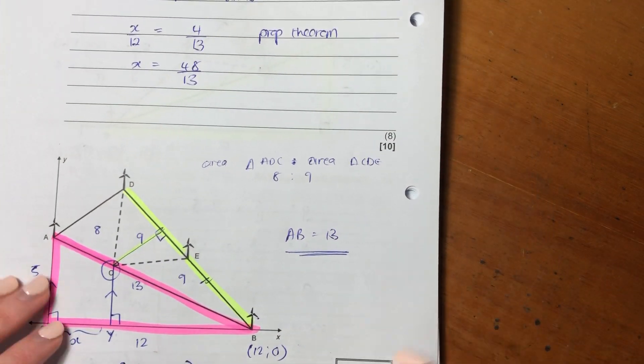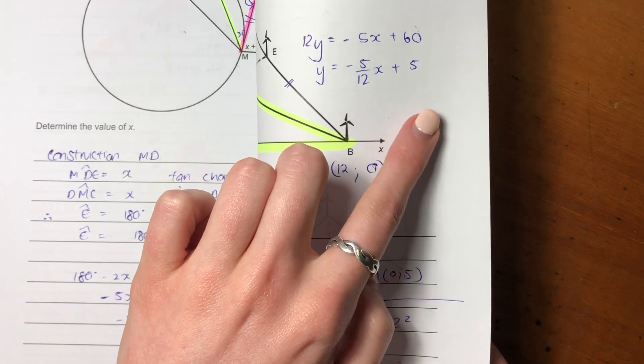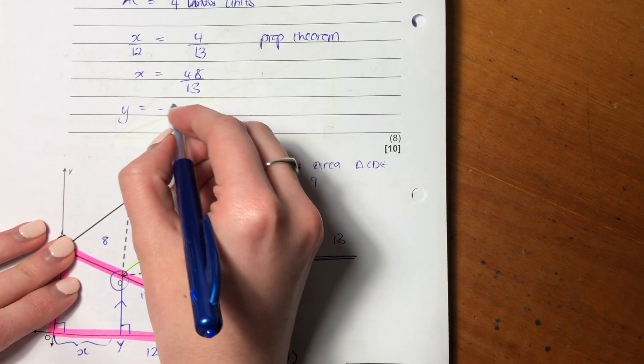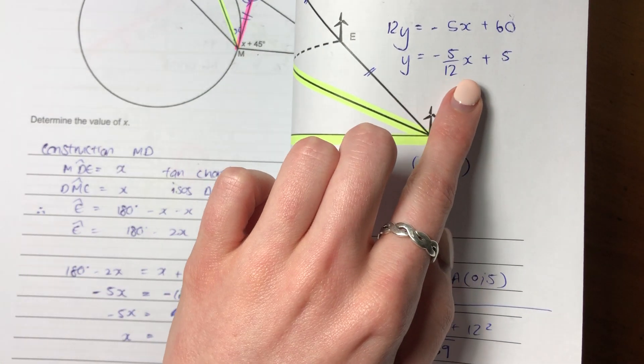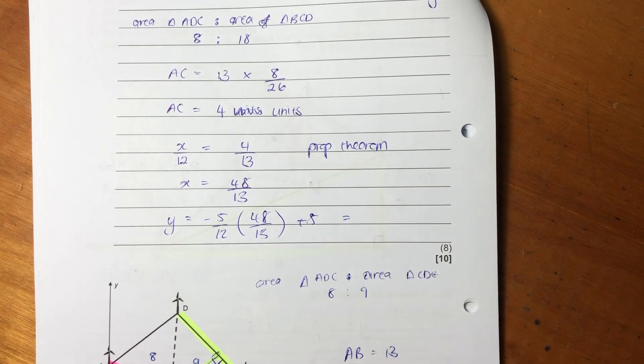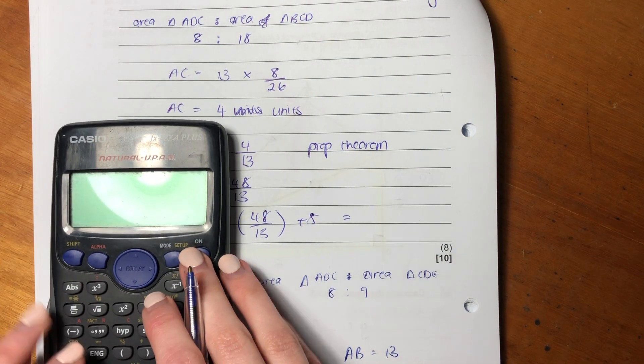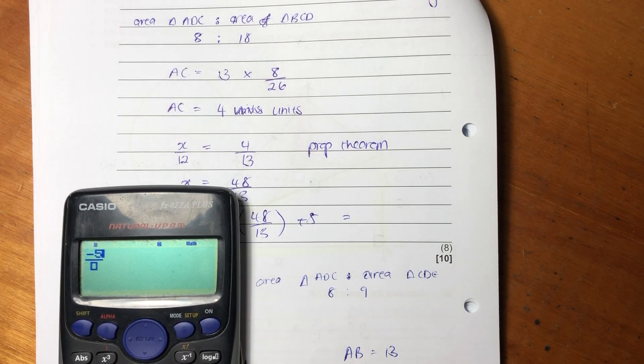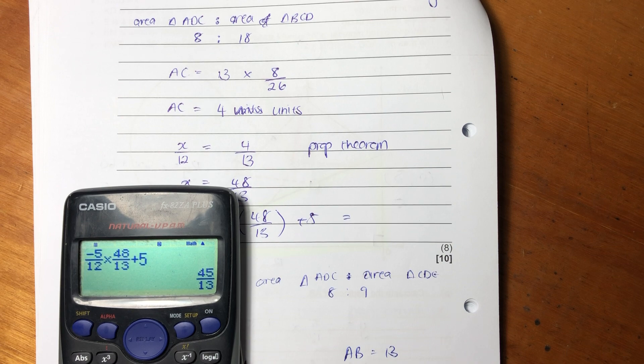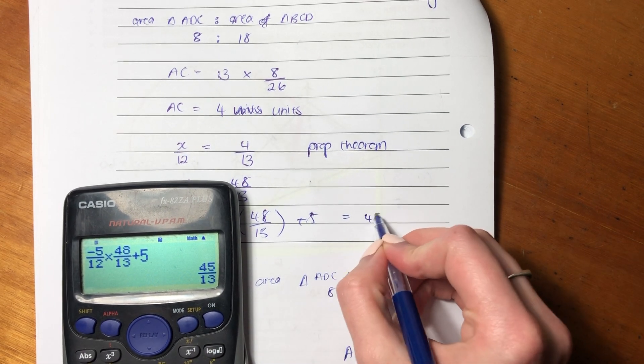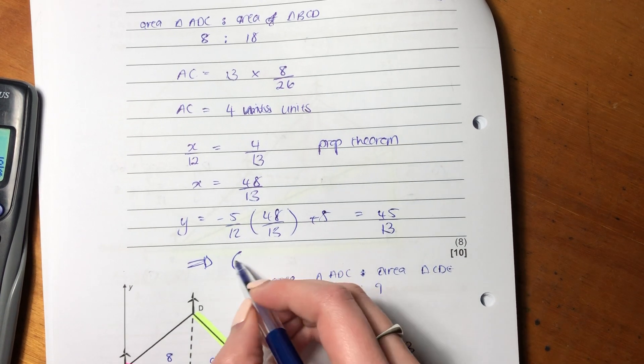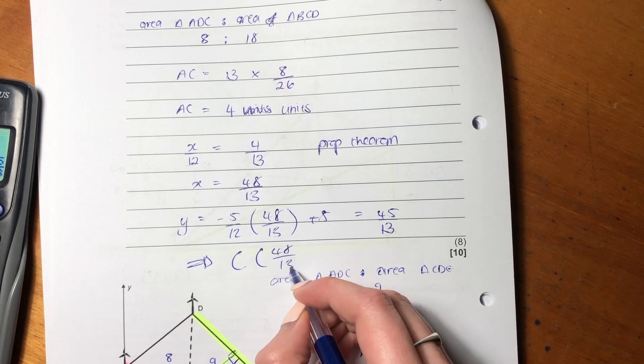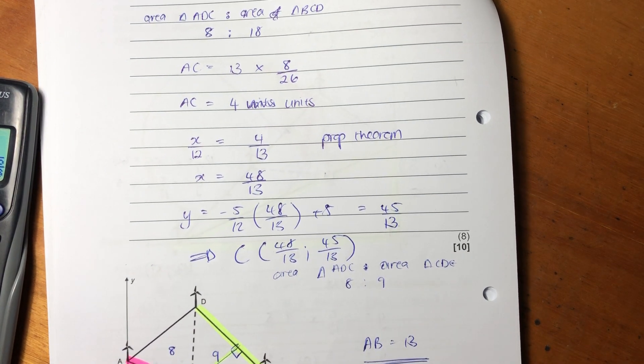So now all we need to do is sub that X value back into this straight line that we have here. Y equals negative 5 over 12, 48 over 13 plus 5. Make sure you write it correctly. And that will give us our Y coordinate of C because C lies on the line AB. Negative 5 over 12 times by 48 over 13 plus 5 gives us, oh, don't do that. Just keep it in fraction form. 45 over 13. So our final answer here is the coordinates of C are 48 over 13 and 45 over 13.